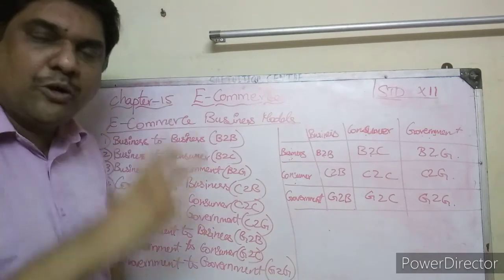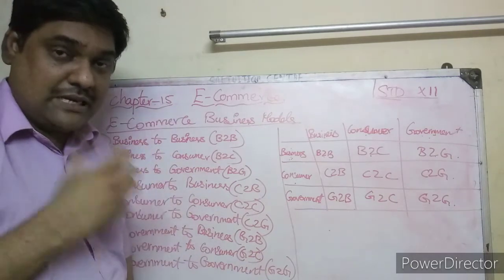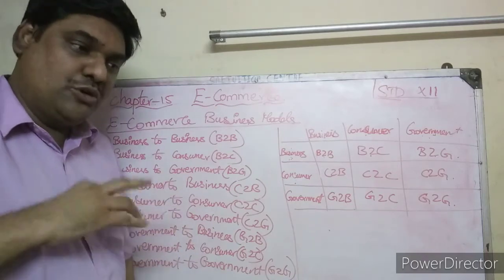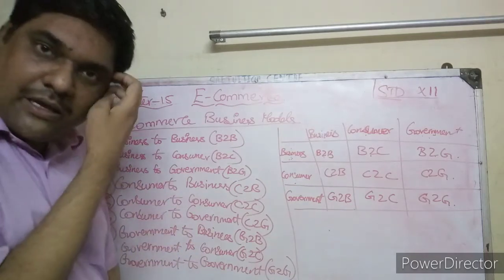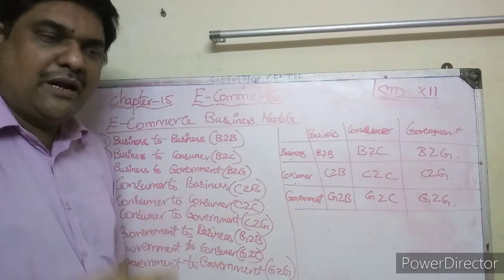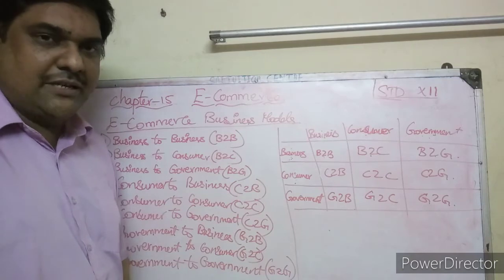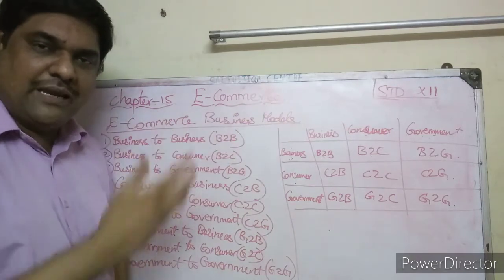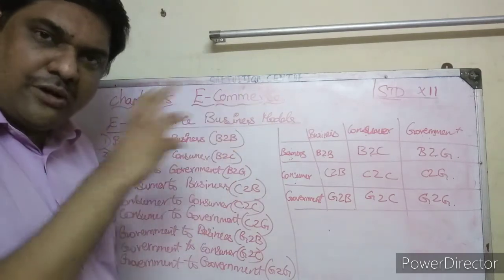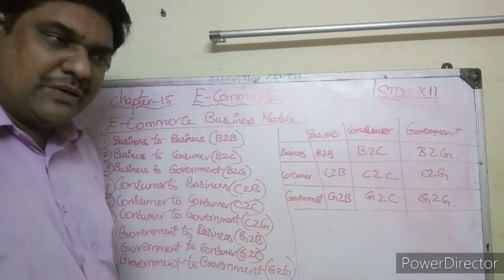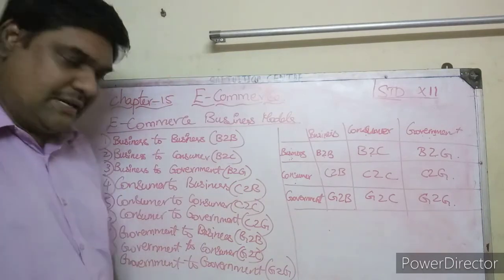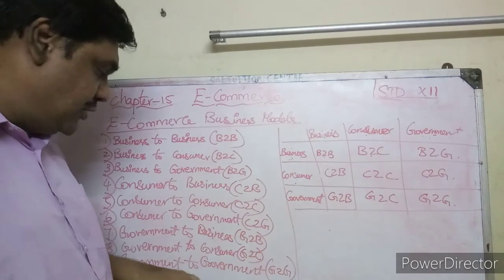Government to government refers to online transactions between two governments through websites. For example, between two different states like Tamil Nadu and Andhra Pradesh, or Maharashtra and Uttar Pradesh — the state government transacting with another state government or the central government online is called government to government.